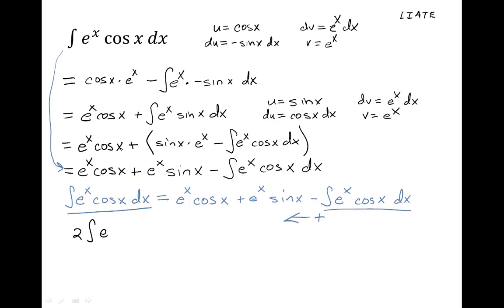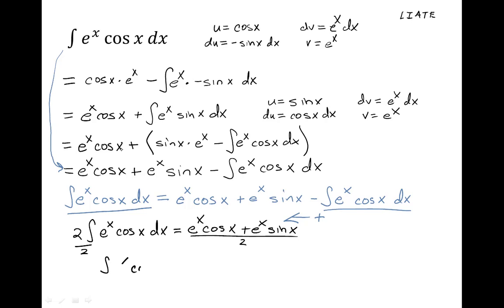Adding the integral back to the left side gives us 2 times the integral of e to the x cosine x dx equals e to the x cosine x plus e to the x sine x. We're solving for our integral, so we divide both sides by 2. The integral of e to the x cosine x dx equals the quantity e to the x cosine x plus e to the x sine x, all over 2.